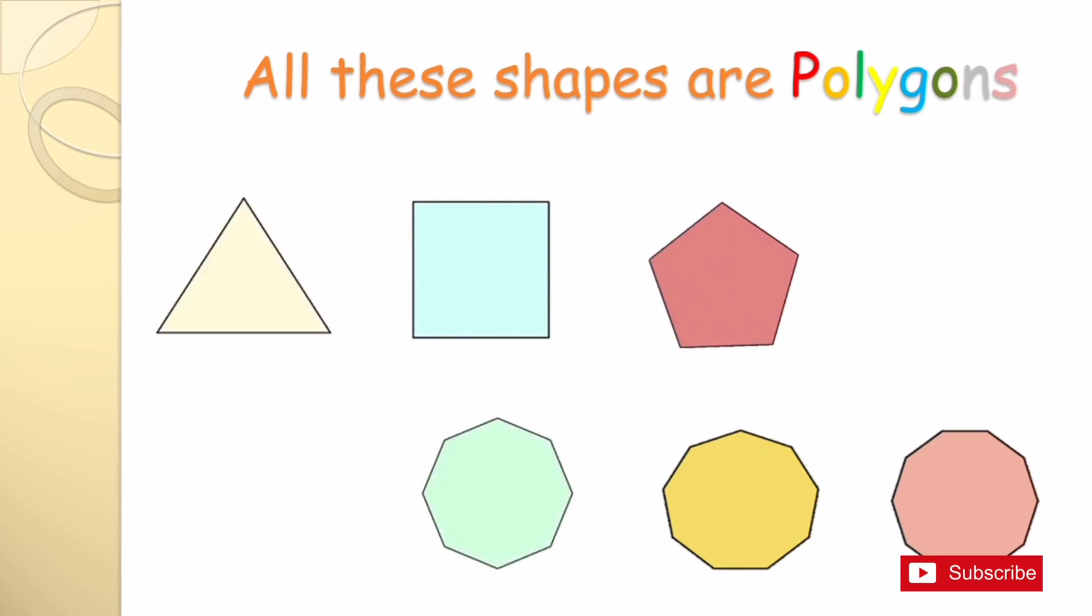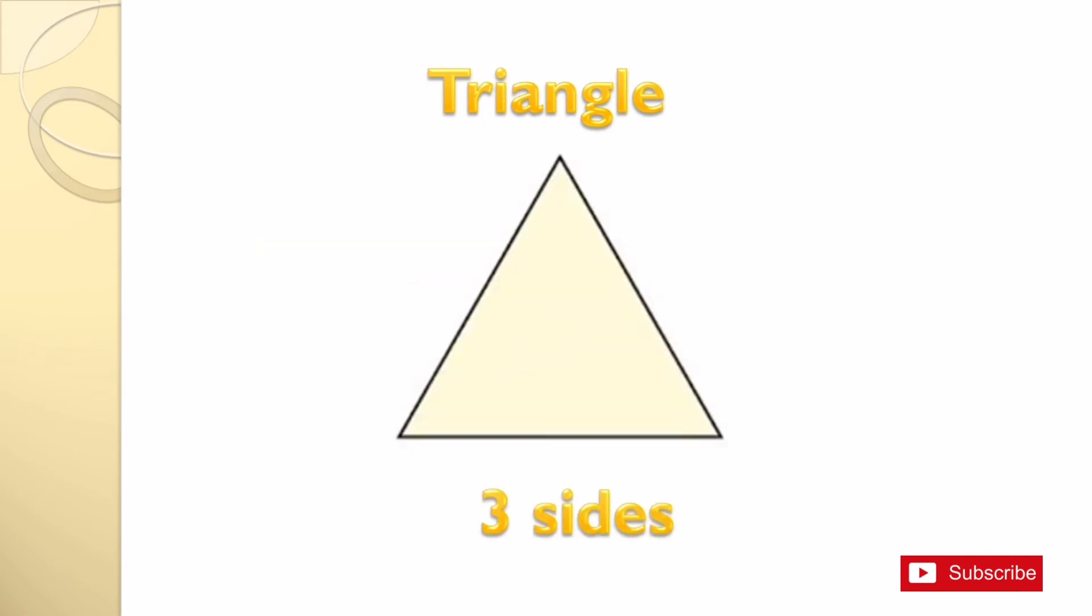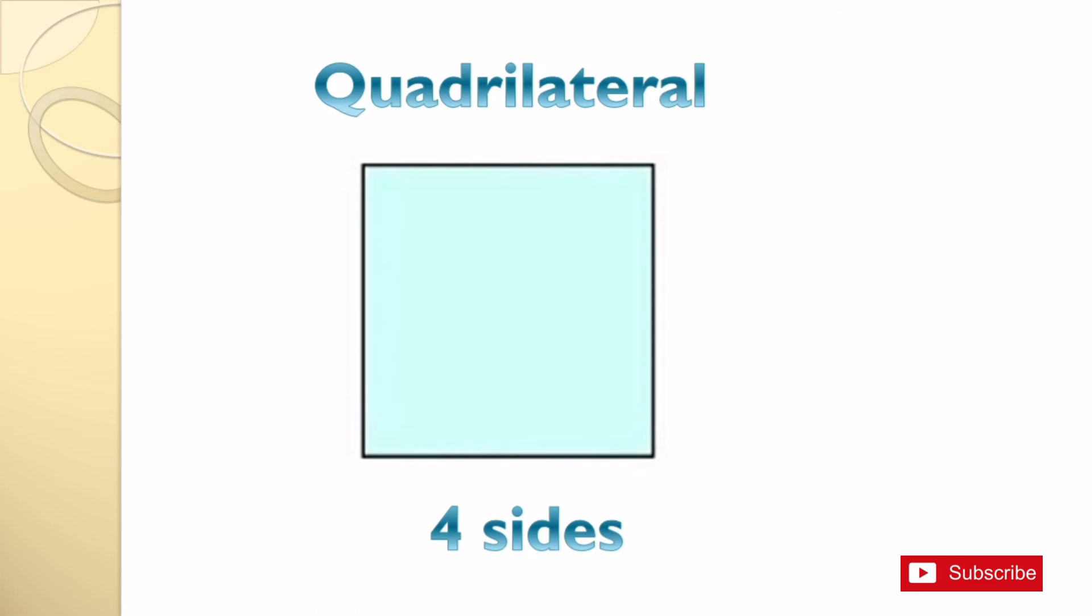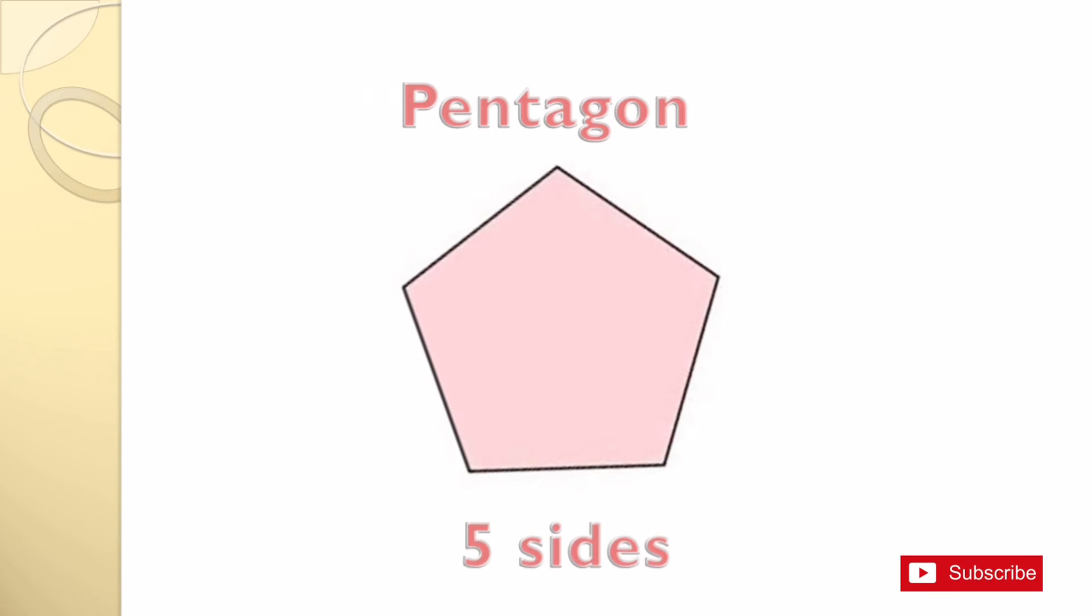They are all regular polygons. A triangle has three sides. A quadrilateral has four sides. A pentagon has five sides.